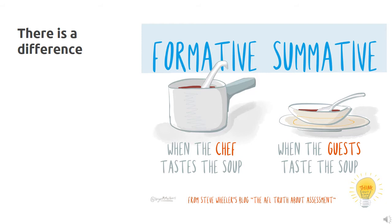Say you don't sample it, but rather just keep cooking away, not really knowing for sure if it's got everything that it needs. Now you send it out and it gets sent back because it's bland. Well, now you know. But now it's too late to fix the soup because the soup is finished cooking — you will have to start a new batch, also known as reteach it. That's summative assessment.